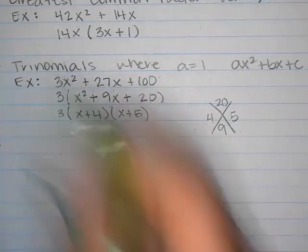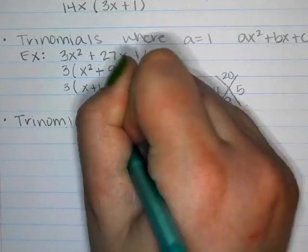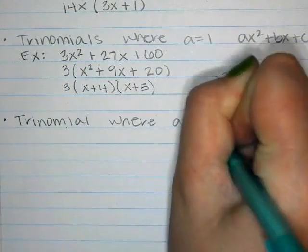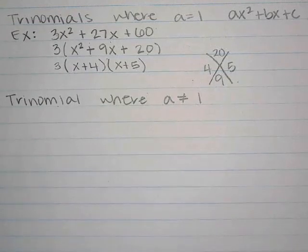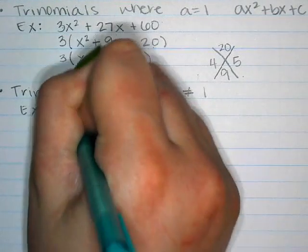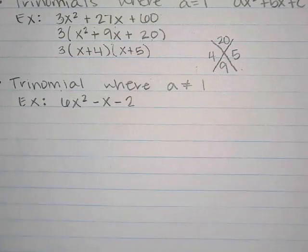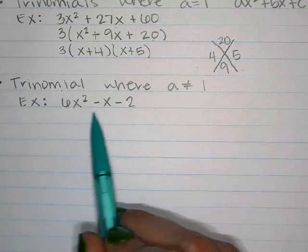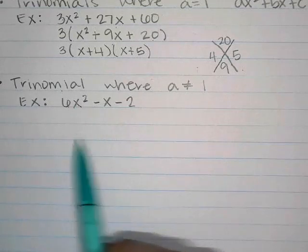The next type is trinomials where a does not equal one — where we actually have a number in front of the x squared. Different teachers use different methods. You may have learned the box method. There's also a method I like called slide divide. I'll show you both, and you can use whichever you're comfortable with.